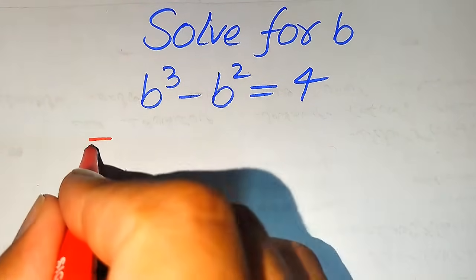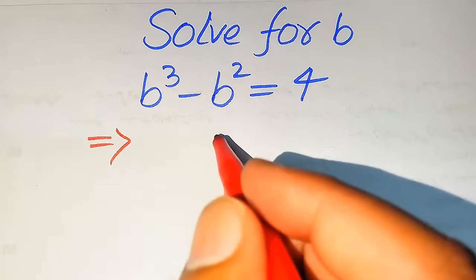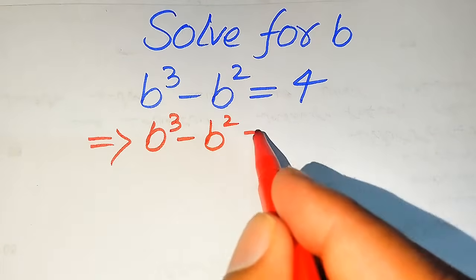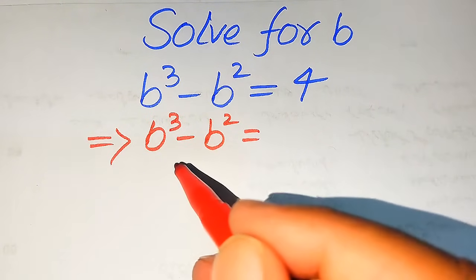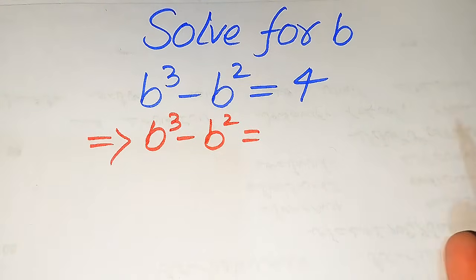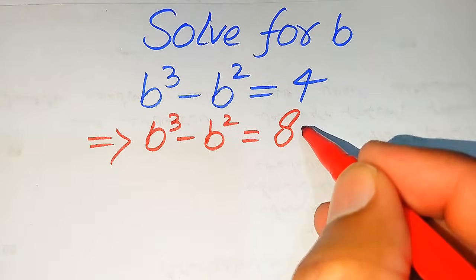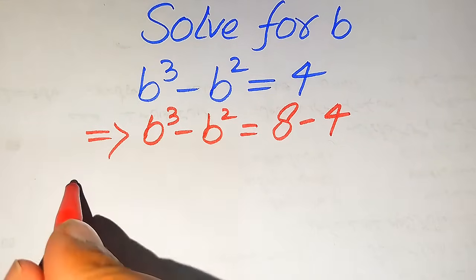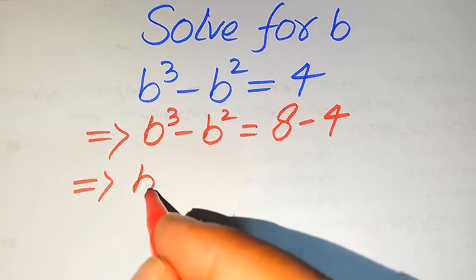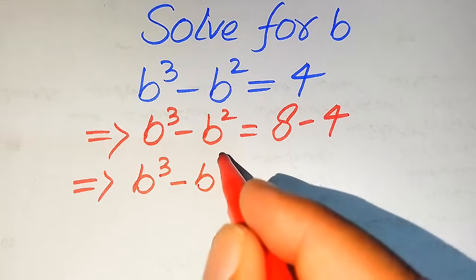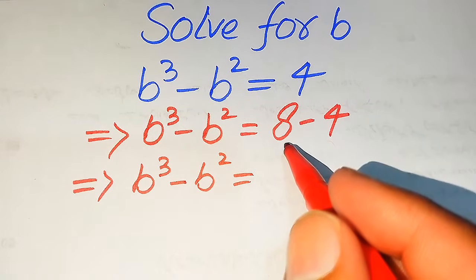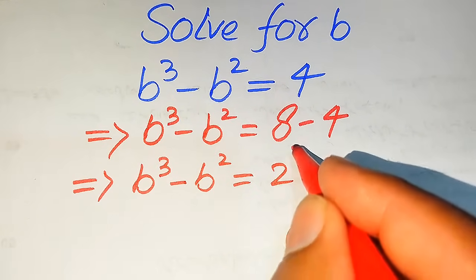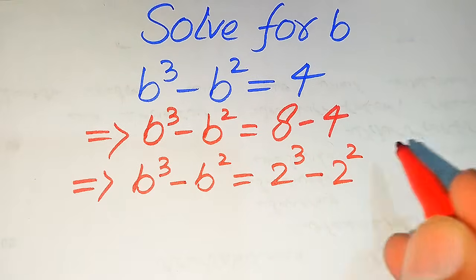The very first thing we are going to do is focus on the right hand side. On the left hand side we have b cubed minus b squared, so we convert the right hand side into the form of a cube and a square. For this we need to break this 4 as 8 minus 4, and we write 8 as 2 cubed minus 2 squared.